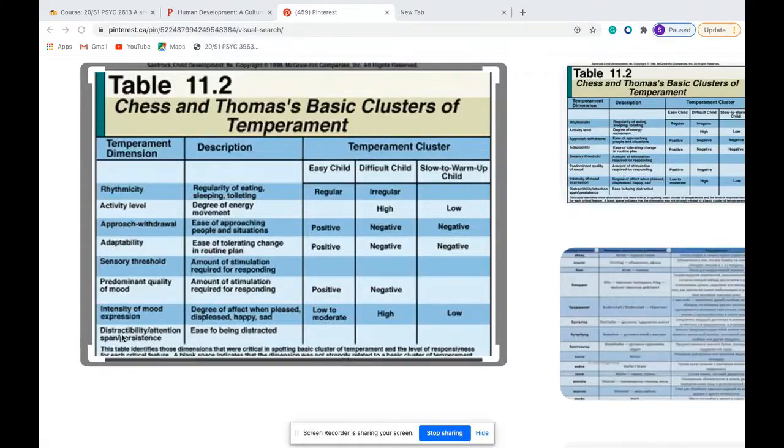And here we have distractibility, attention span, persistence. So ease of being distracted. As we saw in the video with Dr. Vanier that she shared, we had the example with the plant. As soon as in the study the children were presented with the plant, some were more easily distracted than others. Some were completely distracted. They couldn't pay attention on anything else but the plant. That's basically what completely destabilized them. So this is what we have here, these nine characteristics.